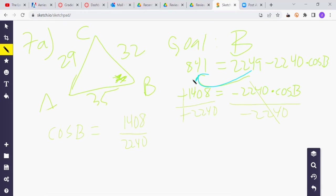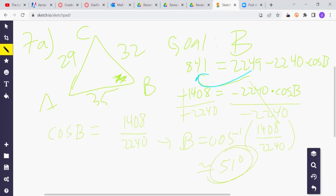And now, to get B alone, you have to go cosine inverse both sides. So B is going to equal cosine inverse of 1408 over 2240. I have my calculator here, cosine inverse of that. Check the answer key, but it should be about 51 degrees. That was the goal. So that's our final answer, about 51 degrees for problem 7, part A.